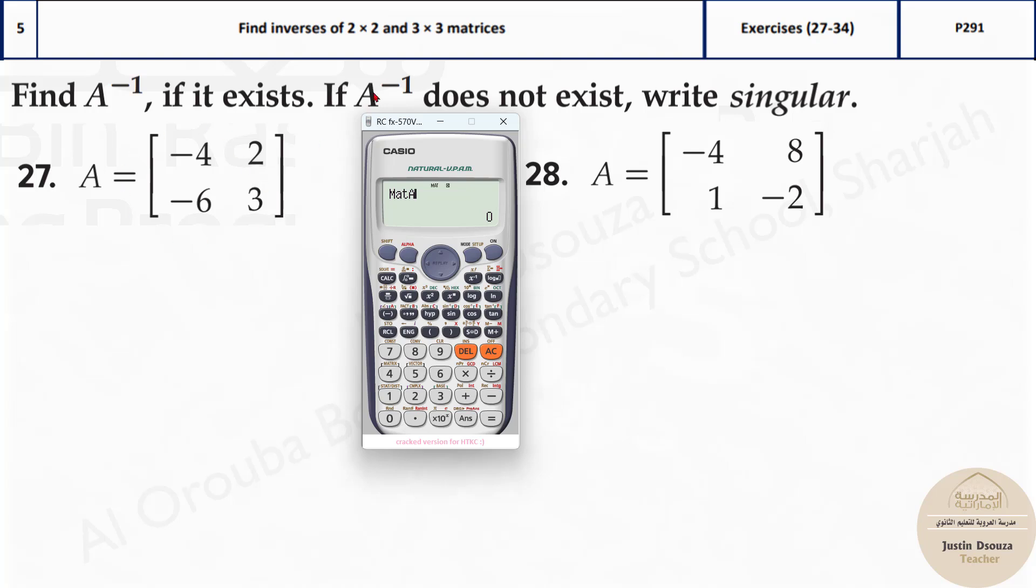Now I want to take the inverse. Inverse is by this symbol over here. x to the power minus 1 is x inverse. And equal to, it's a math error. If I'm getting a math error, this means this is a singular matrix. This cannot be taken as inverse because the determinant of this is 0. It's singular.